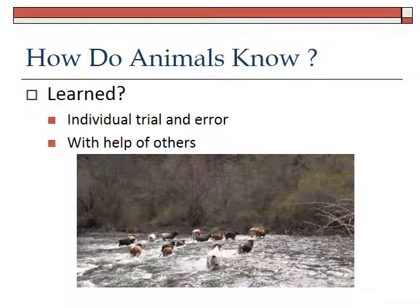Going back to how animals know where to graze — they learn how to do that through individual trial and error and with the help of others. Here's a picture of some cattle walking across a creek in April on the Grand Ronde River — it was really cold. But these cattle knew what to do; they had probably learned from an early age and were following their peers. They had all the skills to cross the river, having learned this habitat skill.